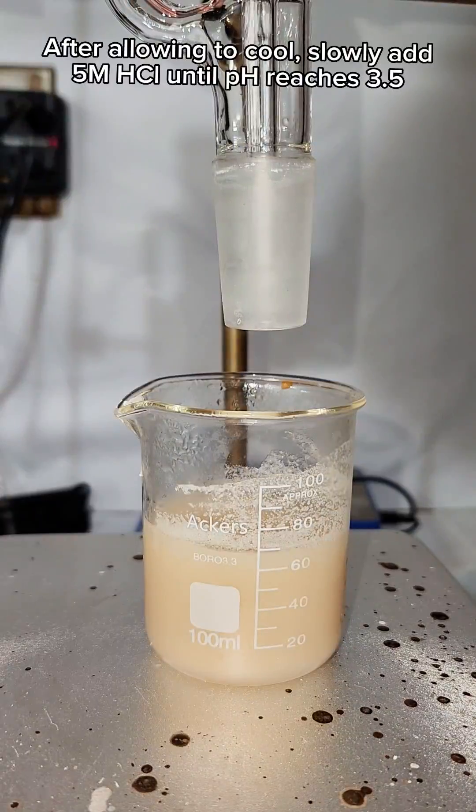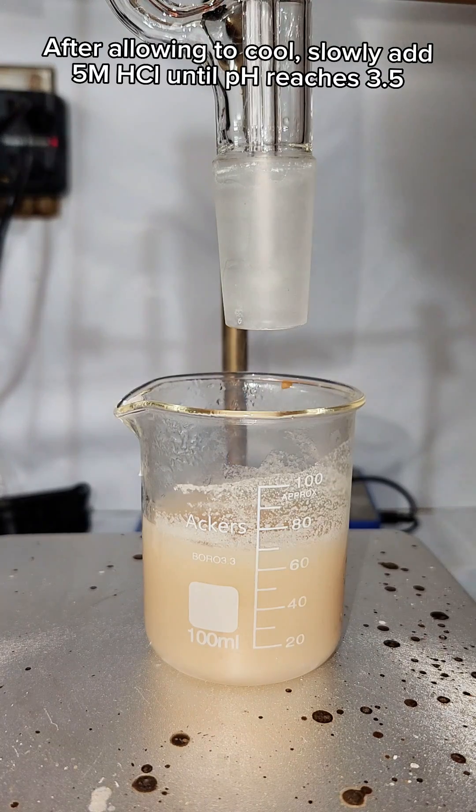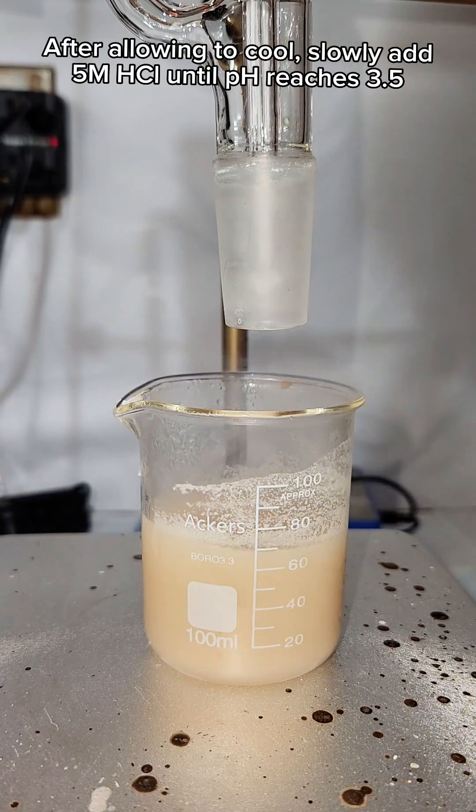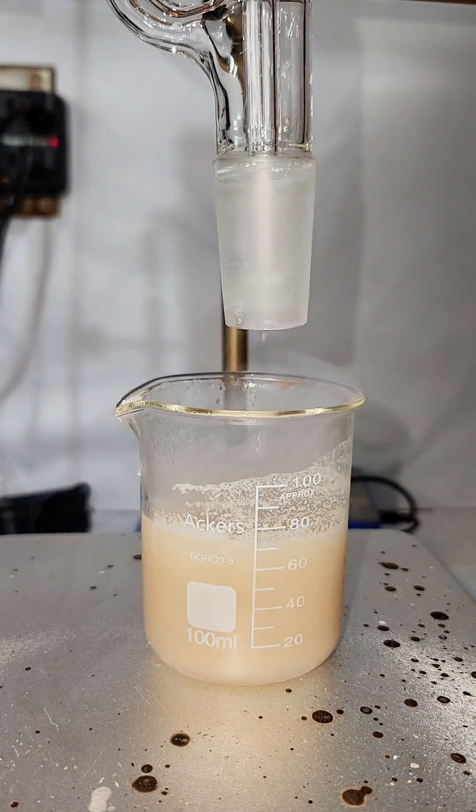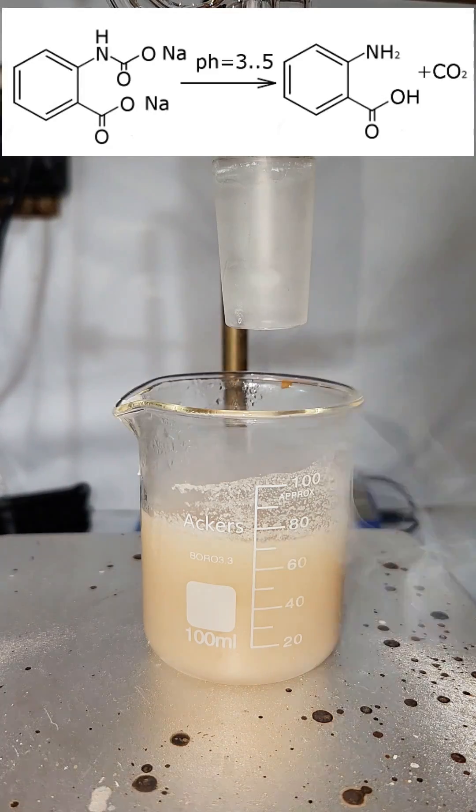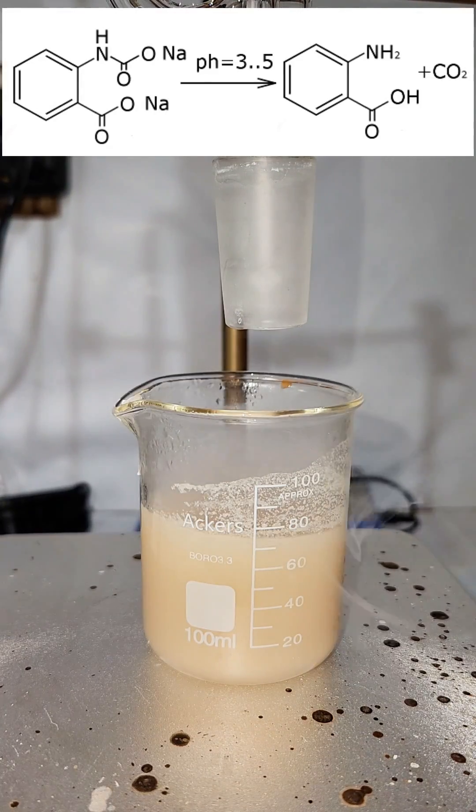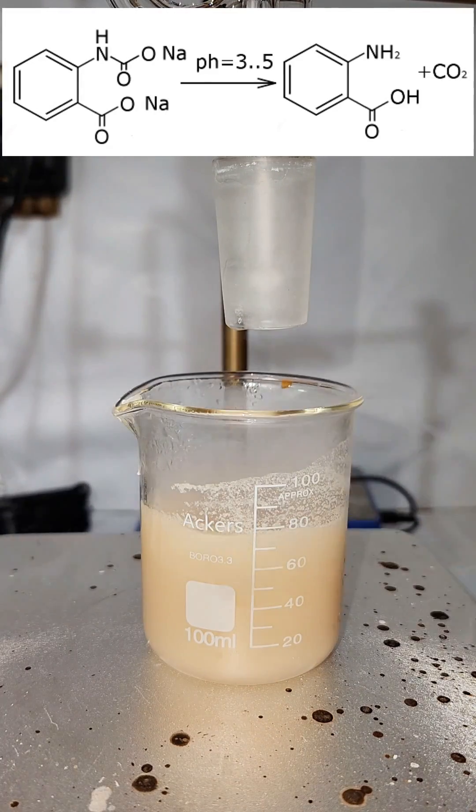For my last step I allow my solution to cool and then slowly add 5 molar hydrochloric acid until my pH reaches 3.5. This step will displace both sodiums bound to my intermediate and produce sodium chloride and CO2 gas as byproducts.